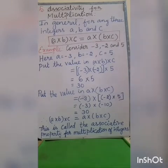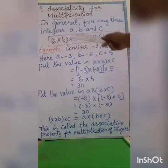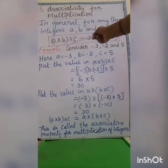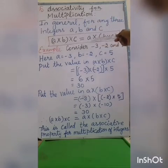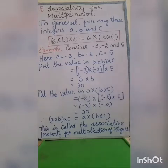The associativity of multiplication: this is the general form of the associative property. In general, for any 3 integers a, b, and c, here 3 variables are used. We have (a × b) × c = a × (b × c), where a × b is grouped together on the left-hand side, and b × c is grouped together on the right-hand side. This is the general form of the associative property for multiplication of integers.